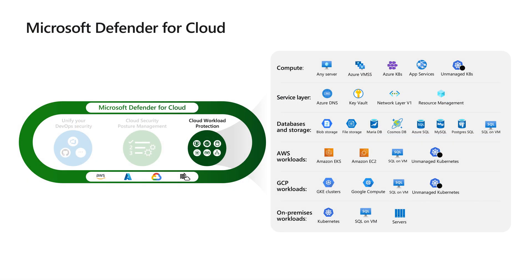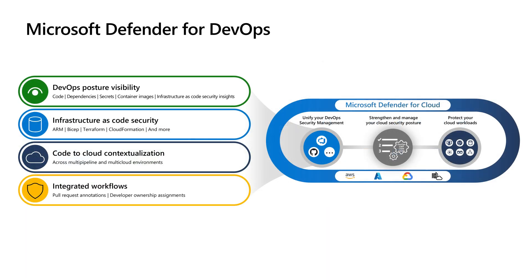Microsoft Defender for DevOps is part of Microsoft Defender for Cloud, a tool for securing infrastructure in Azure, AWS, GCP, on-premises, or on Azure DevOps and GitHub. With this addition to Defender for Cloud, we get a DevOps posture visibility to scan source code, dependencies, secrets, container images, and infrastructure as code — whether they are ARM templates, Bicep templates, Terraform templates, CloudFormation, and more.